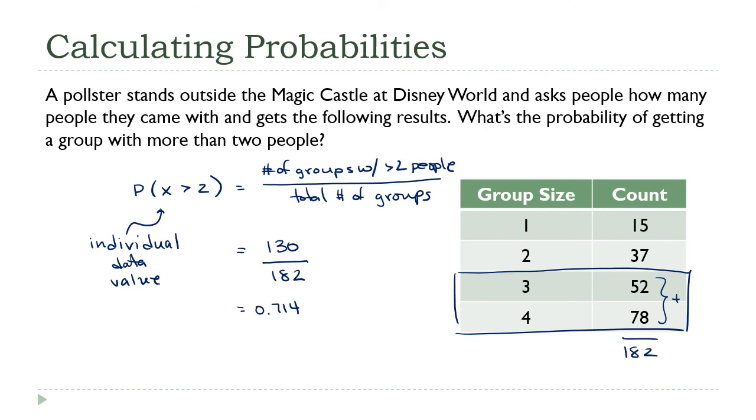If this seems familiar, hopefully this does seem a little familiar. What am I doing here? I'm taking a part of the group and dividing it by the entire group. I'm taking the size of a part and dividing it by the size of the whole. If you think back, that's how we calculate percentages. The size of a section of a pie chart divided by the total, that's how we calculate a percentage. And that's exactly what these probabilities are. Saying that 71.4% of the population was in a group greater than two people is the same as saying the probability X is greater than two is 0.714. These probabilities and percentages really are interchangeable with each other.